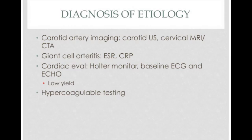Once you've made the diagnosis of central retinal artery occlusion, it's important to figure out why so you can prevent other events. If you think it could be carotid in origin, get a carotid ultrasound or a cervical MRI or CTA. For all patients, check an ESR and CRP at presentation. If you think it could be cardiac in origin, they may need a Holter monitor, a baseline ECG to pick up rhythm abnormalities, and an echo to look for clots — though the yield is pretty low. You might also want to do hypercoagulable testing to see if there's something making them clot more easily than average.